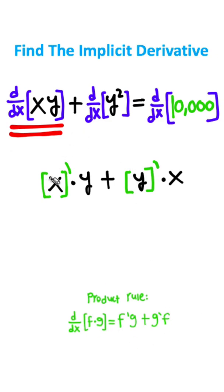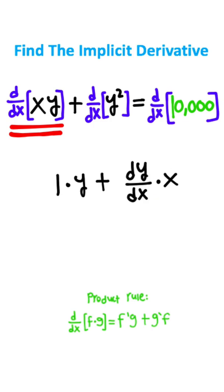Now evaluate the two derivatives in this equation. The derivative of x with respect to x gives you 1. The derivative of y with respect to x gives you dy over dx.